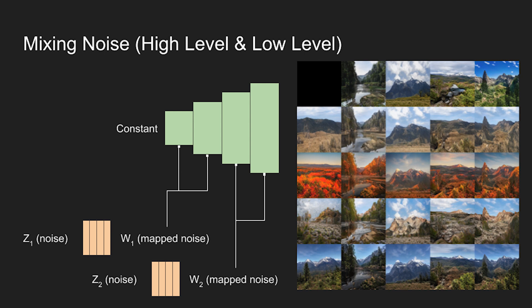The more important part of this task is StyleGAN2. StyleGAN2 uses a style-based generator, which means that each generated image consists of different styles at different resolutions. Styles applied at lower resolutions will affect the coarse details of the image, such as general structural details. Styles applied at larger resolutions will affect finer details, such as the colors, grass patterns, etc.